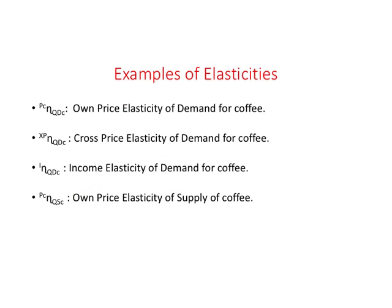Let us look at some examples of elasticities on the topics that we have covered. We have looked at the demand side and also the supply side. We know quantity demanded of coffee, abbreviated as QDC, is the dependent variable. And then we have a bunch of independent variables like price of coffee (PC), price of sugar, price of tea, and income. Let us look at different elasticities associated on the demand side.